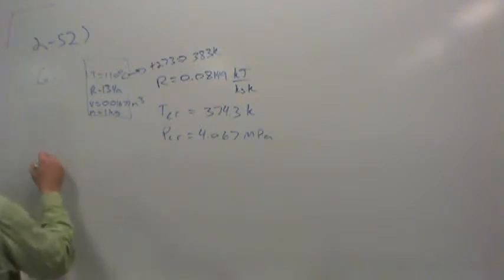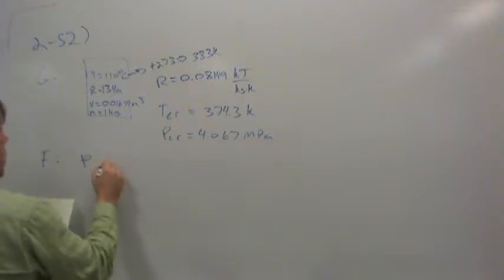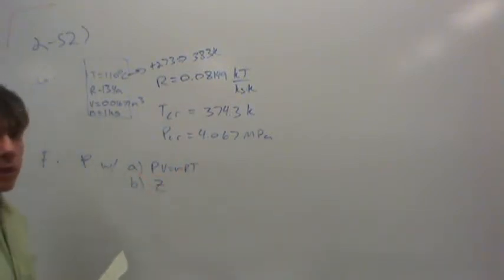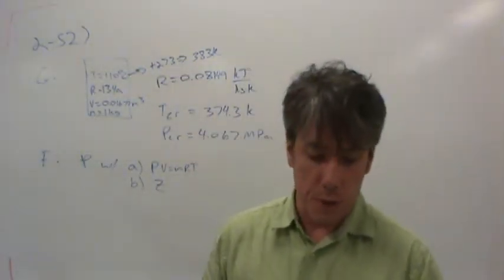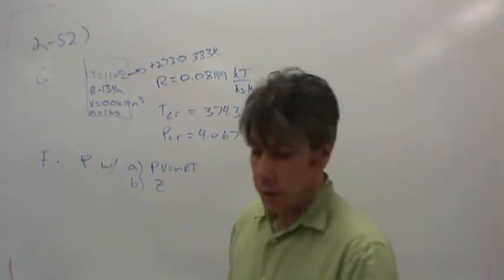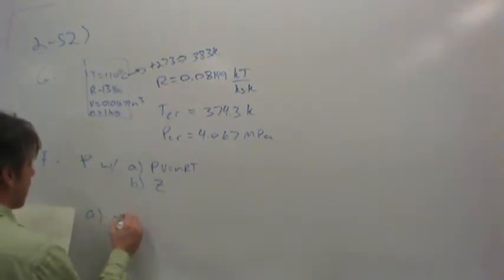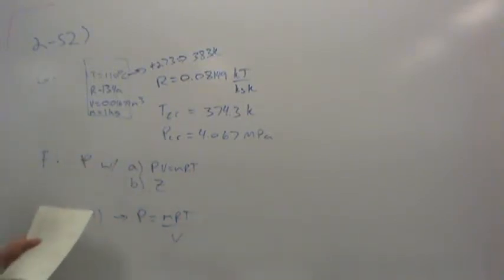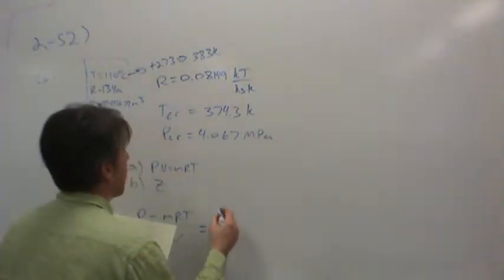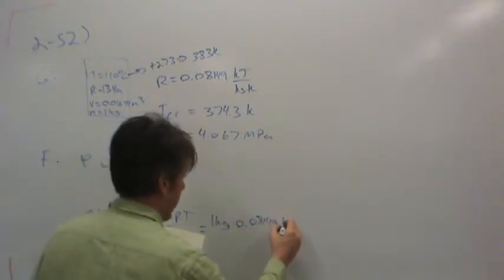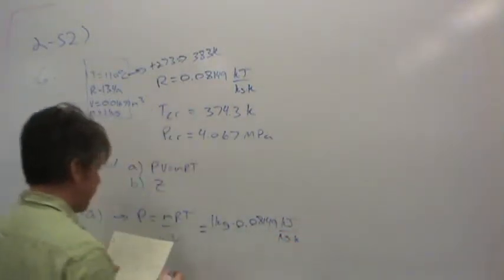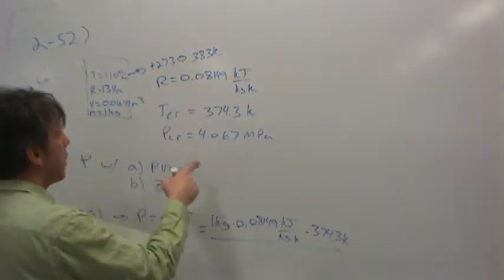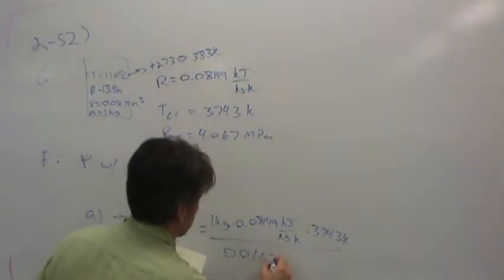We're supposed to find the pressure with the ideal gas law, and then with generalized compressibility using the compressibility factor Z — which is basically a correction factor for the ideal gas law. For part A, we solve the ideal gas equation: pressure equals MRT over V. Plugging in: one kilogram times 0.08149 kJ per kg per Kelvin times 383 Kelvin, divided by 0.01677 cubic meters.